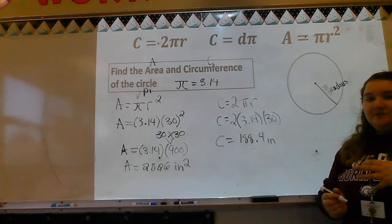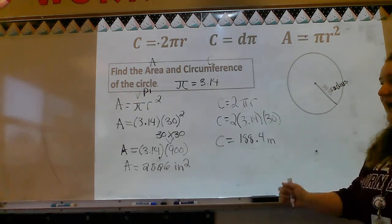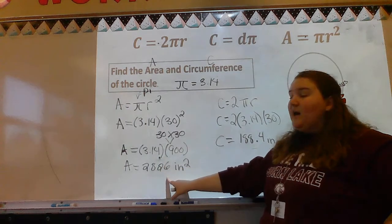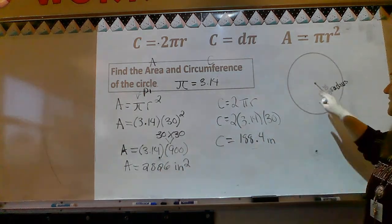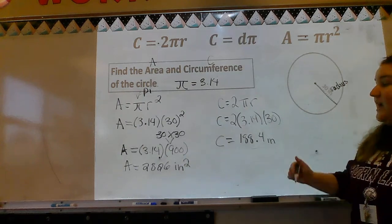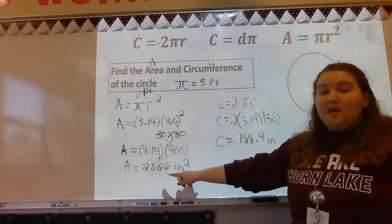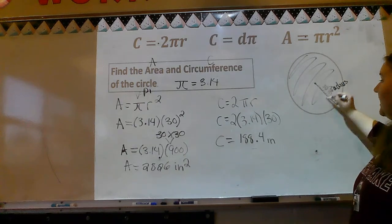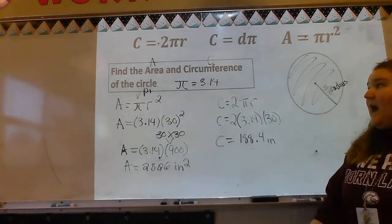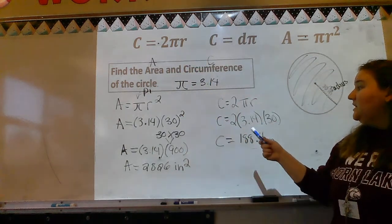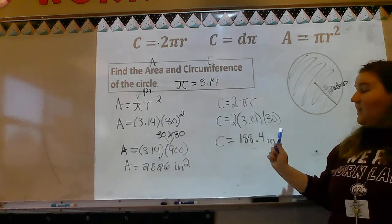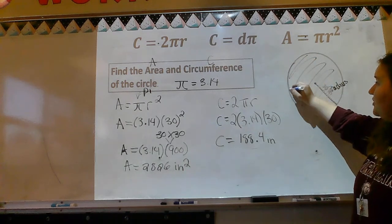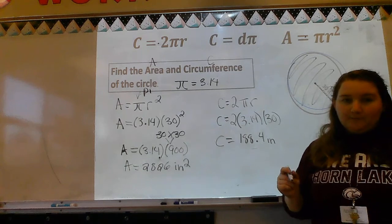Okay, this is a lot of information — that's okay. For the record, let's talk it out again. Area: we used our formula, plugged in what we knew, used our exponents, multiplied, and got our answer. That tells you this pizza takes up 2,826 inches squared — that's all the inside. Circumference: I used my formula, plugged in what I knew, multiplied, and got 188.4 — so the crust would be 188.4 inches all the way around the circle.